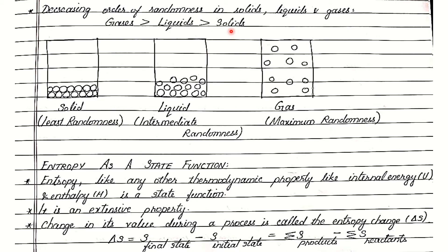Entropy, like any other thermodynamic property such as internal energy and enthalpy, is a state function. It is also an extensive property because it depends on the quantity of matter contained in the system. Change in its value during a process is called entropy change, represented by delta S. Delta S is equal to the difference between the entropy of the system in the final state and the entropy of the system in the initial state — also equal to the difference between the summation of entropy of products and the summation of entropy of reactants.